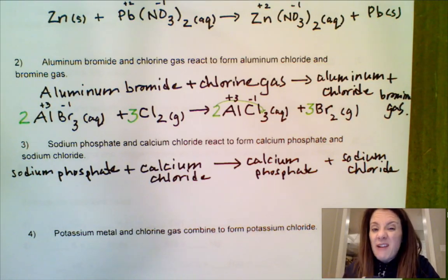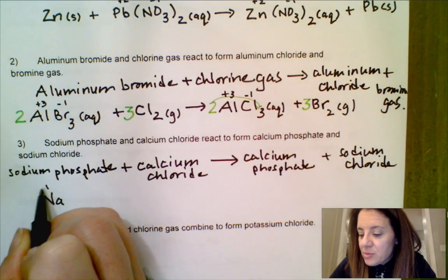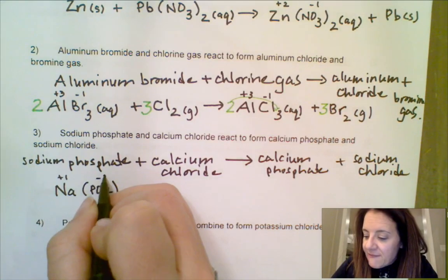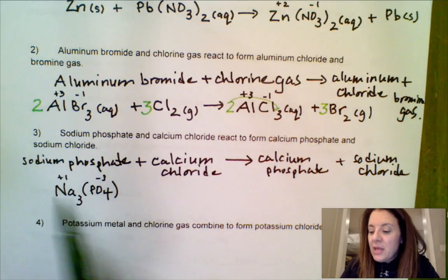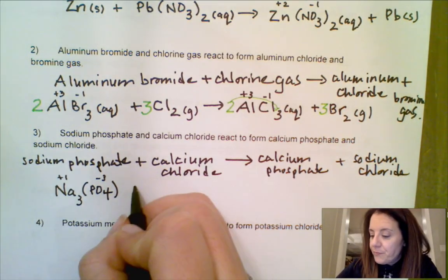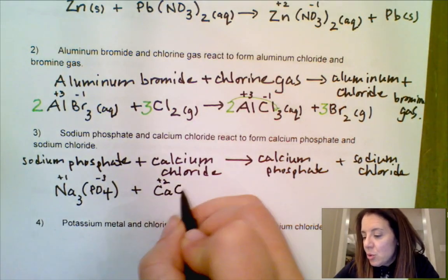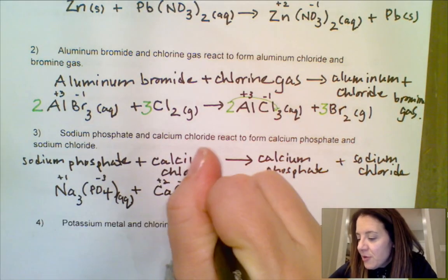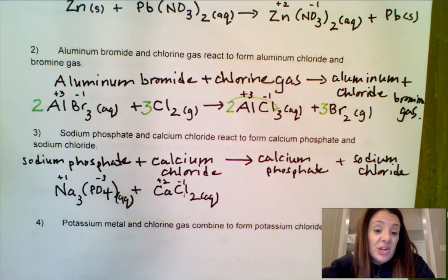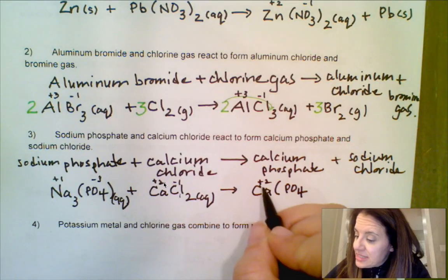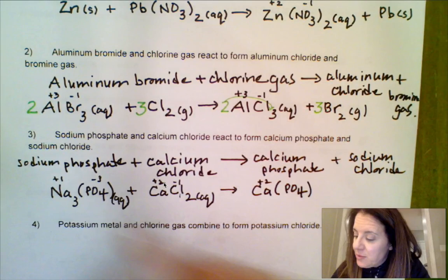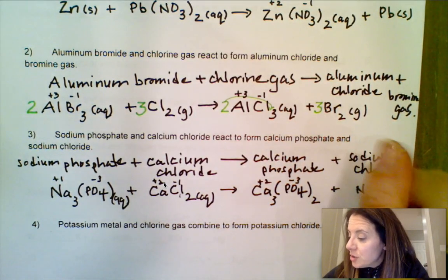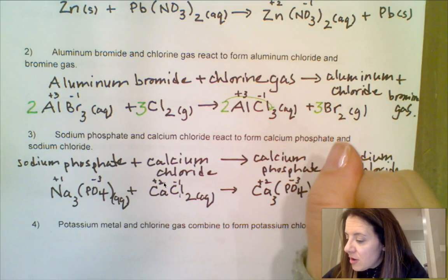When two compounds react, they need to be in aqueous form. Sodium phosphate: sodium is plus one, phosphate is the polyatomic PO4 with a valence of negative three. We crisscross to get Na3PO4, aqueous. Calcium chloride: calcium is plus two, chlorine is minus one, giving CaCl2, aqueous. For the products, calcium phosphate: calcium is CA with plus two, phosphate PO4 gives Ca3(PO4)2, aqueous, plus sodium chloride — all compounds are aqueous.